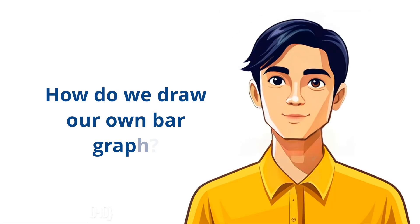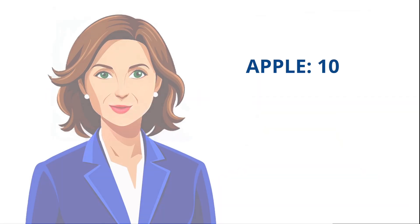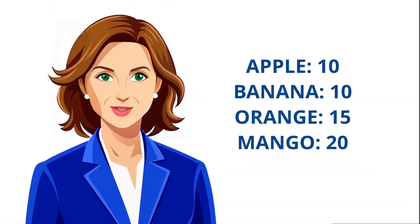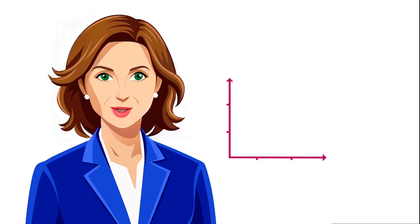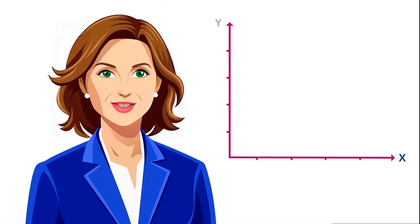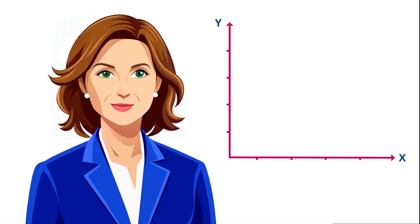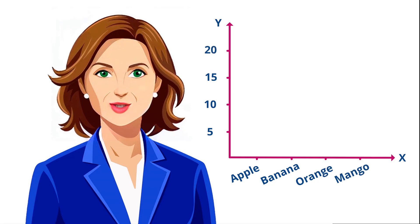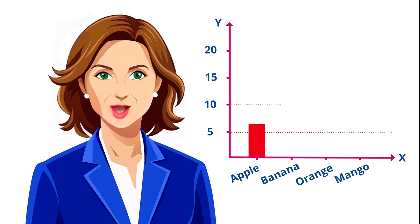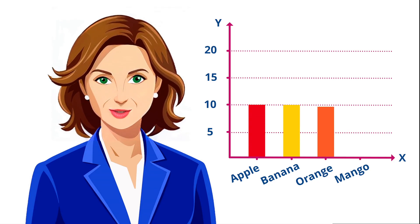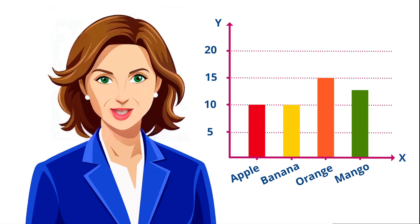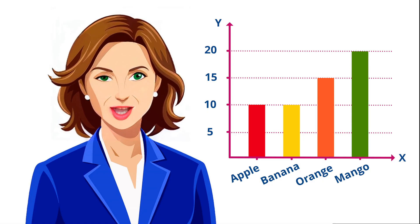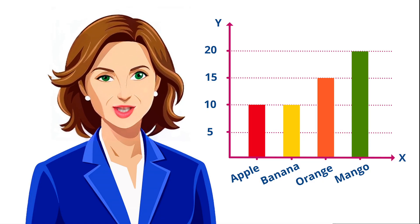How do we draw our own bar graph? Start by deciding on categories and values, then label your x and y-axis. Choose an appropriate scale on the y-axis to fit your data. Next, draw bars for each category based on their values, ensuring each bar's height or length matches the data.